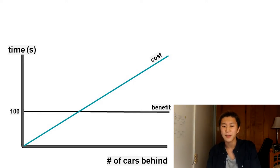As we saw earlier, with only one car behind me, the net benefit equals 80 seconds. With 20 cars behind me, the net cost is 300 seconds.